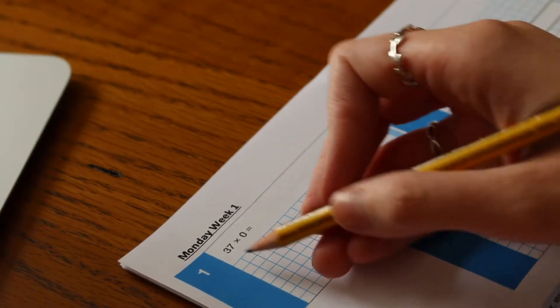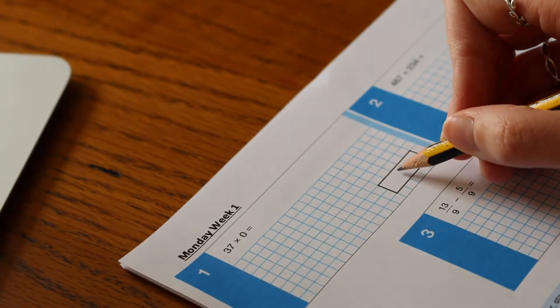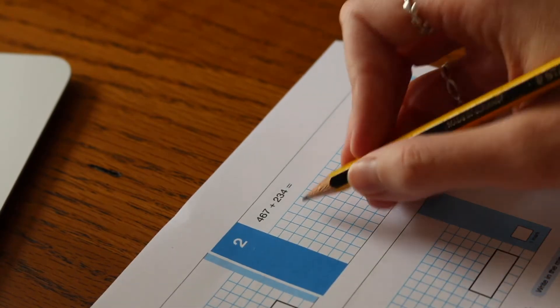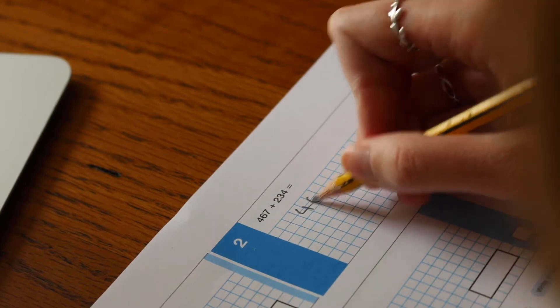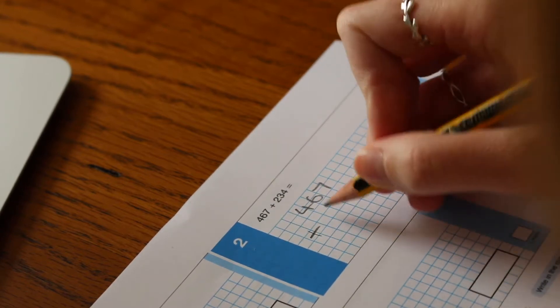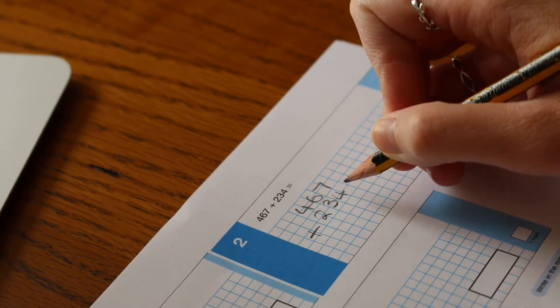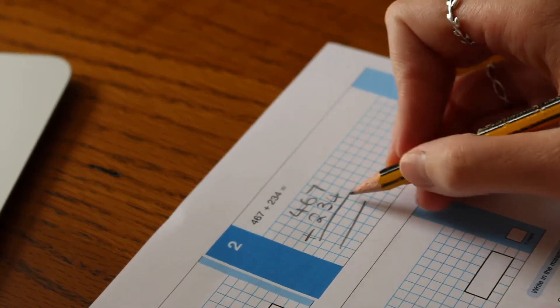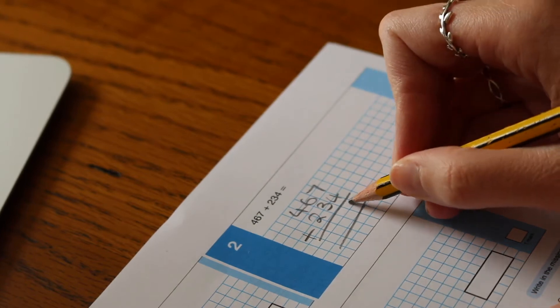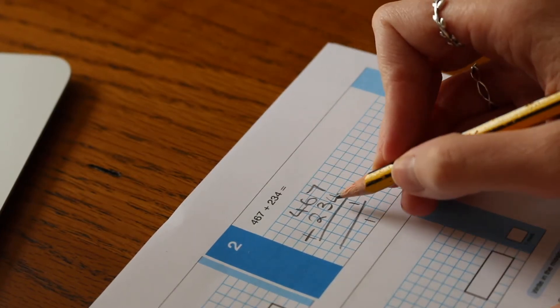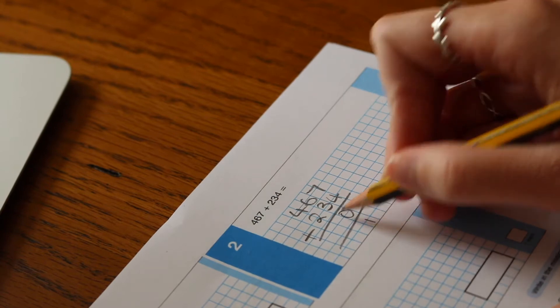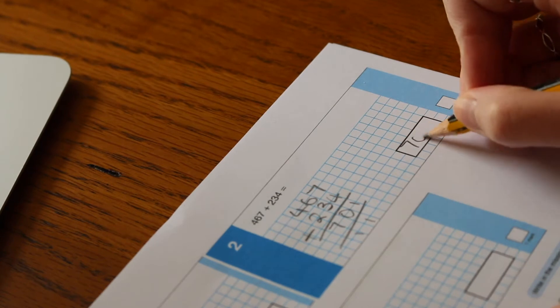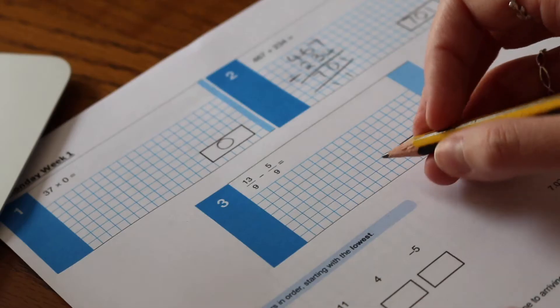Okay, so the first one is nice and easy because as we know anything multiplied by 0 is 0. Number 2 we can do as column addition, so we've got 467 add 234. We know that 7 add 4 is 11, 6 add 3 is 9, add 1 is 10, and 4 add 2 is 6, add 1 is 7, so the answer is 701.